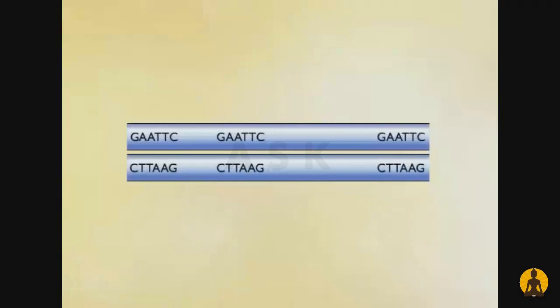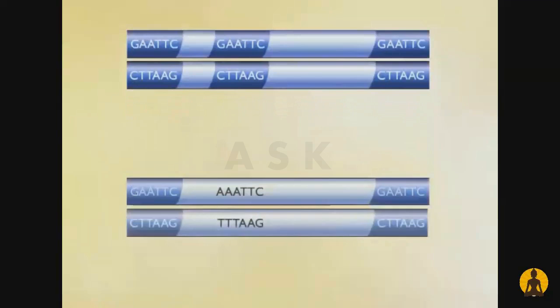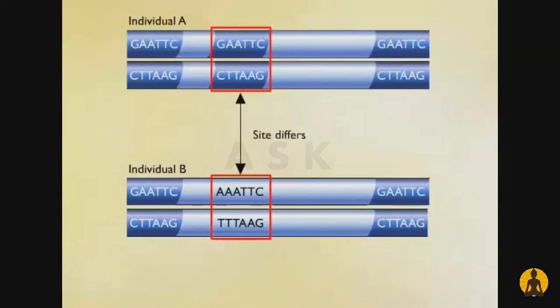Restriction enzymes recognize very specific sequences of nucleotides in DNA. DNAs from different individuals rarely have exactly the same array of restriction sites and distances between these sites. Therefore, the population is said to be polymorphic, having many forms for these restriction fragment patterns.